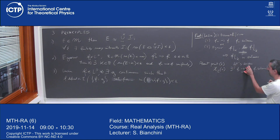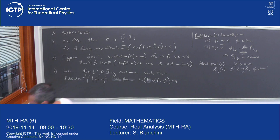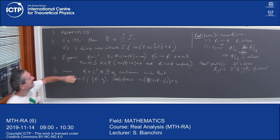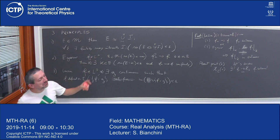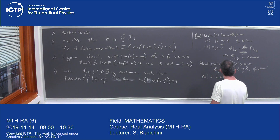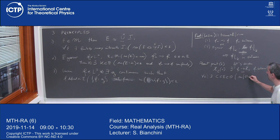Now we need to prove point two: can the indicator function chi_E be approximated by continuous functions F_m converging to chi_E? What do we know about E? For all epsilon, there exists a closed set C contained in E and an open set O containing E such that the measure of O minus C is less than epsilon. This is one of the properties equivalent to the definition of measurability.